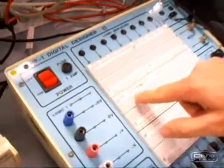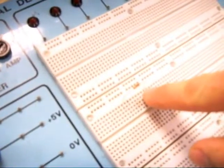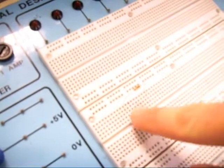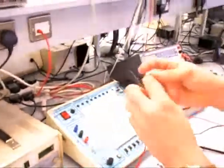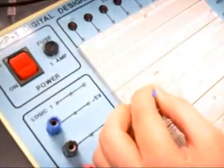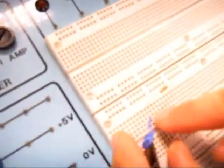In the breadboard, these lines are connected vertically, so this is connected to a line running down here, this is connected to a line running down here. So this means that when we hook in our voltage probe, we can put it in the same line below, and now these two are connected.